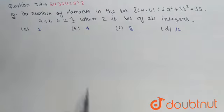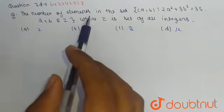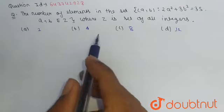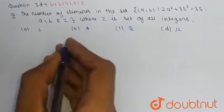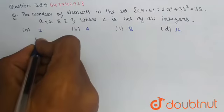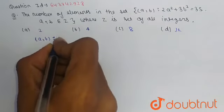is on relation and function, and we have to find the number of elements in the given equation. The options are two, four, eight, and twelve. So consider we have given (a,b) is equal to